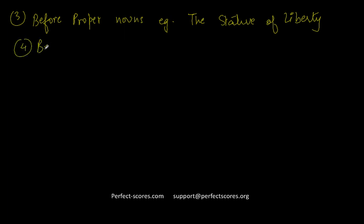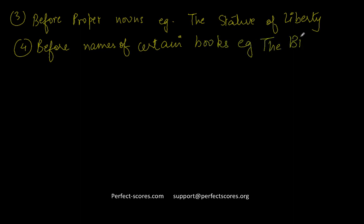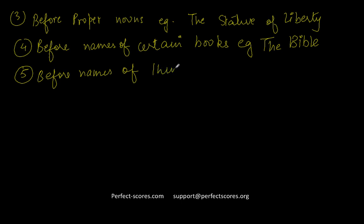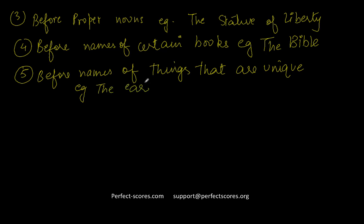Also before names of certain books — for example, the Bible, the Vedas, the Iliad, the Odyssey. And before names of things that are unique — for example, the Earth. 'The Earth revolves around the Sun.' 'The Moon is a natural satellite of the Earth.' Sometimes these can be used without 'the', but usually we use them with 'the'.